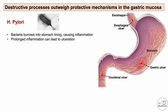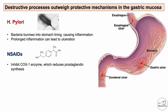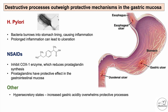NSAIDs like ibuprofen are another important cause. They inhibit COX-1, or cyclooxygenase-1, which reduces prostaglandin synthesis. Since prostaglandins have a protective effect on the gastrointestinal mucosa, prolonged NSAID use reduces protective mechanisms and allows destructive processes to dominate. Hypersecretory states like Zollinger-Ellison syndrome lead to increased gastric acidity, overwhelming protective processes. Viral infections like cytomegalovirus cause inflammation of the GI lining, similarly overwhelming those protective mechanisms.